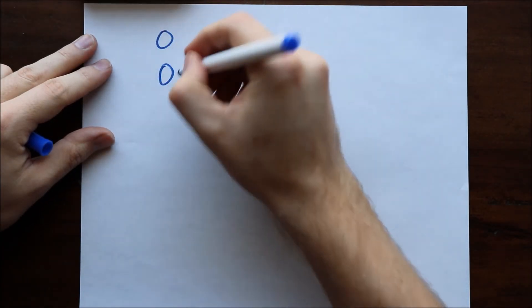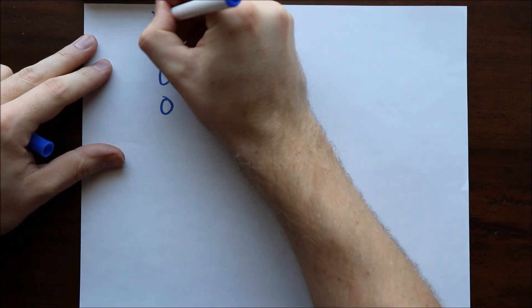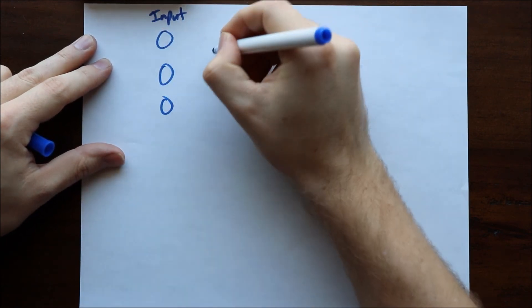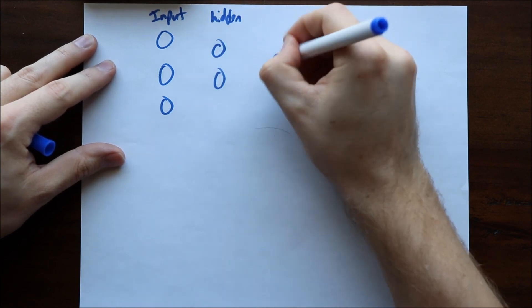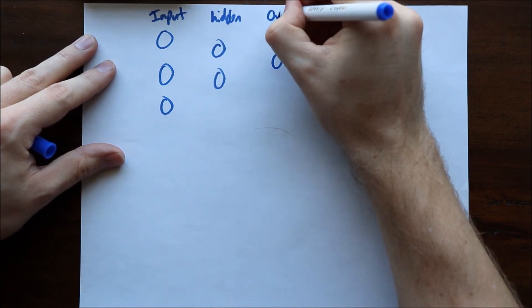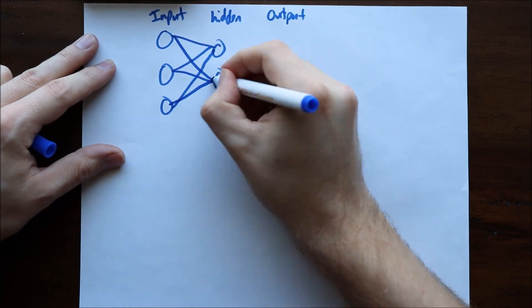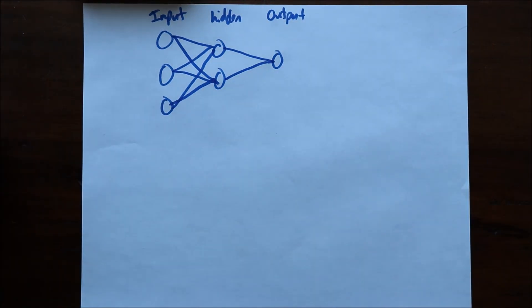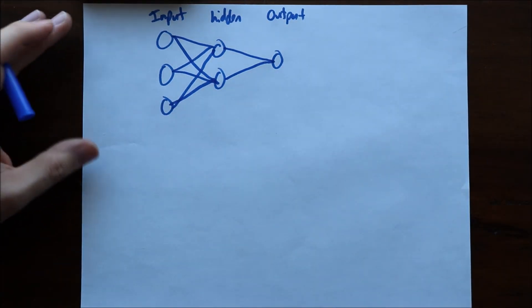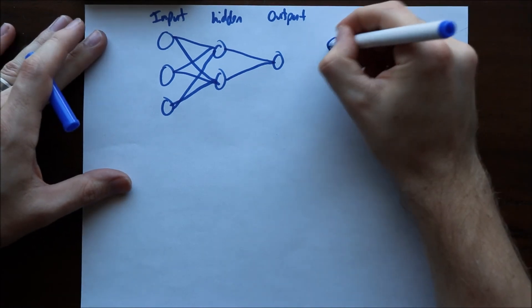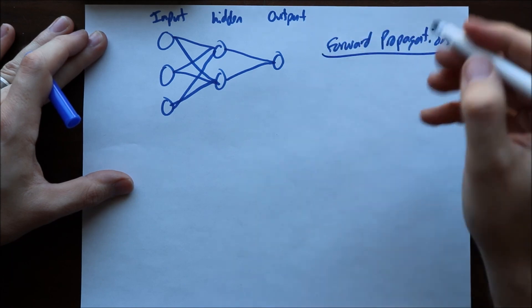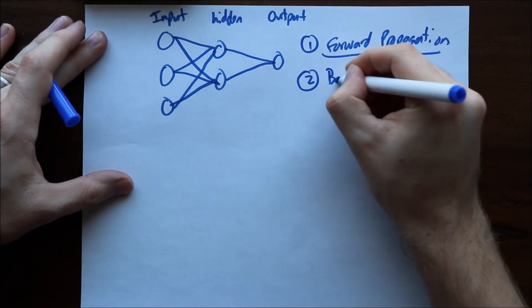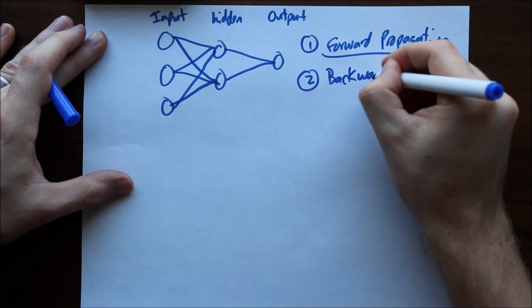In this network here let's just say we have three on your input, you have two which is your hidden, and you have one which is your output. The simple thing to know is that there's essentially two steps. You have what you call forward propagation and you also have backward propagation.